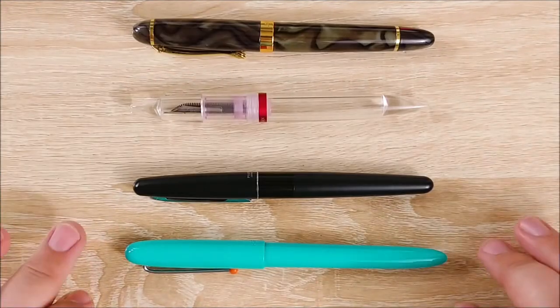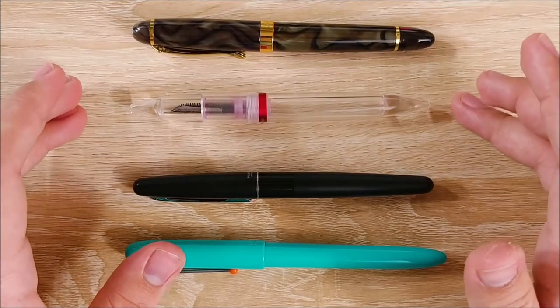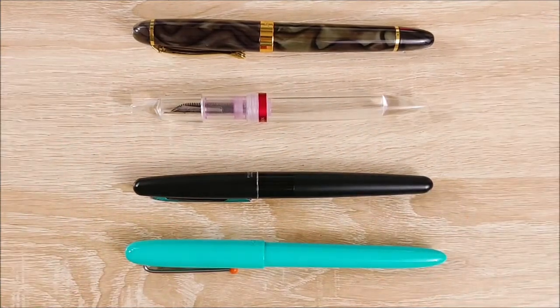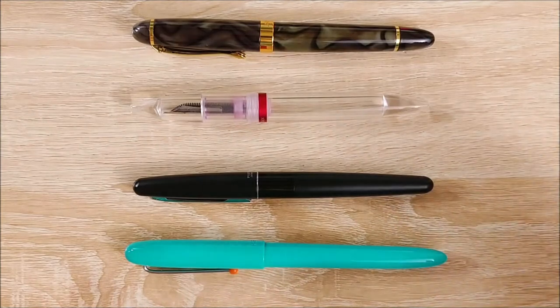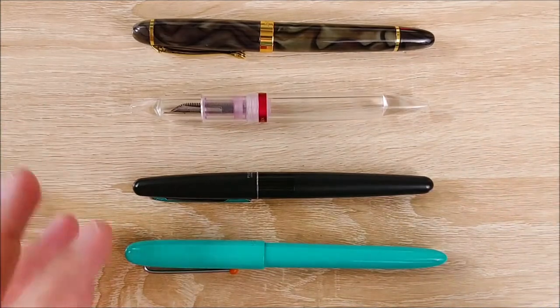On to the size comparison. So at the bottom we have the Kako Retro, then we have the Pilot Metropolitan, the Moonman M2, and the Jinhao X450. So this is about in that same range, maybe just a tad bit longer than most of these other pens in a similar price range.